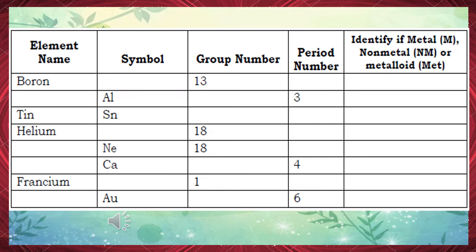Number 2: The element name is aluminum, group number is 13, and it is a metal. Number 3: The element belongs to group 14 and it is a metal. Number 4: The answers are helium, symbol He, period number 1, and it is a nonmetal.